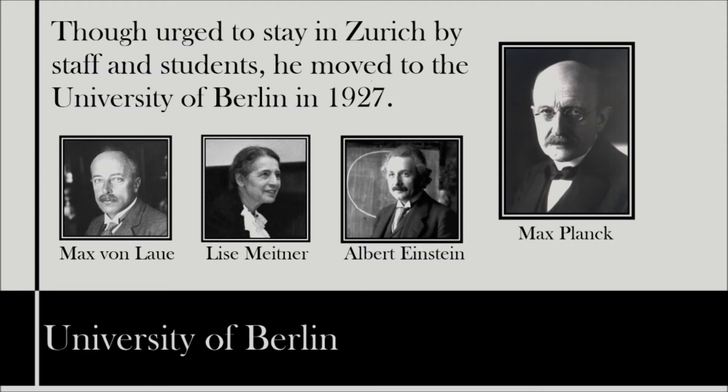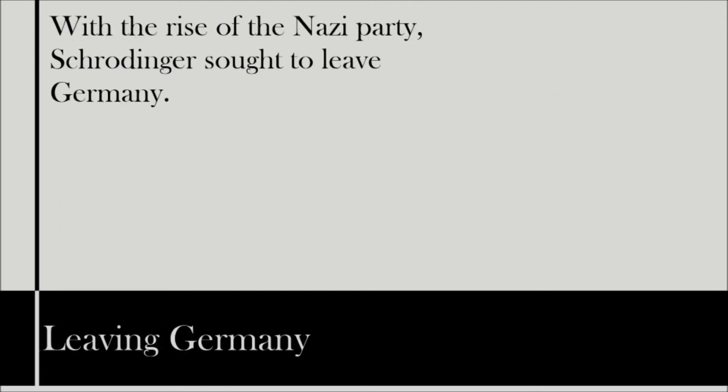Between 1927 and 1933, political upheavals in Germany had led to the rise of the Nazi Party into power, and in 1933, as Hitler was elected Chancellor, Schrödinger resolved to leave Germany. He would move to the University of Oxford, where he lectured on quantum mechanics.